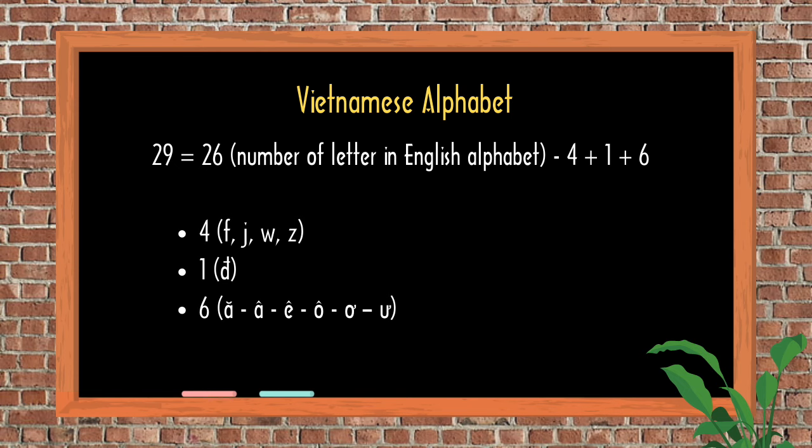There are four consonants that are present in the English alphabet but not in the Vietnamese alphabet: F, J, W, and Z.